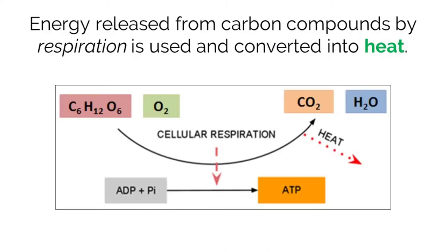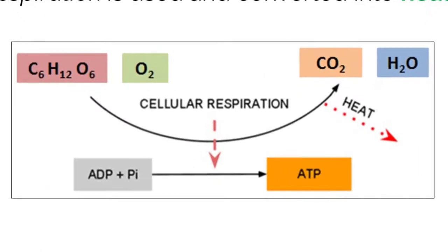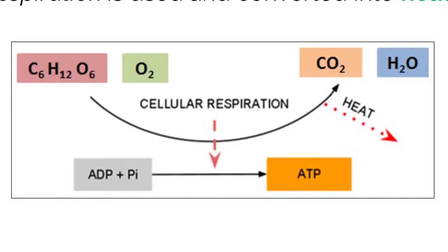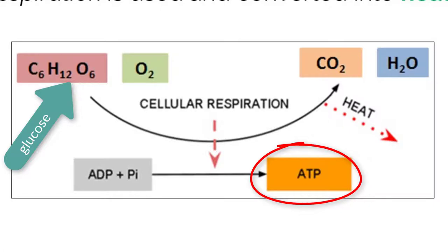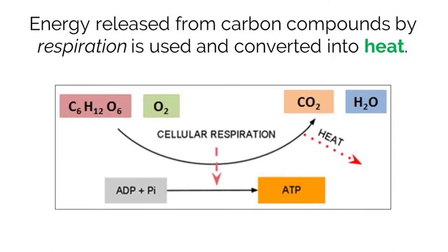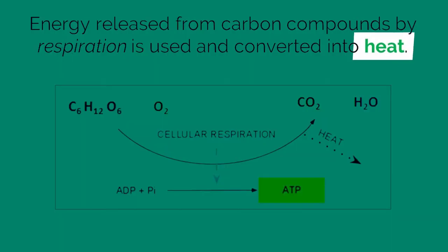Once energy is obtained by an organism through feeding, another process must happen in order to make that energy available in the form of ATP. This process is called cellular respiration. As seen in the picture, cellular respiration breaks down carbon compounds, like glucose, to form ATP. ATP is then used to support chemical reactions in the body for growth and homeostasis, both of which have a byproduct of thermal energy, or heat.